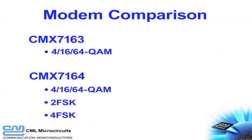The CMX 7163 and CMX 7164 share the same feature set. Both modems support 4, 16, and 64 QAM. The CMX 7164 also supports 2FSK and 4FSK to provide backward compatibility with legacy systems. The information presented in this video is equally applicable to both the CMX 7163 and the CMX 7164, but to keep things simpler we will only refer to the CMX 7163.